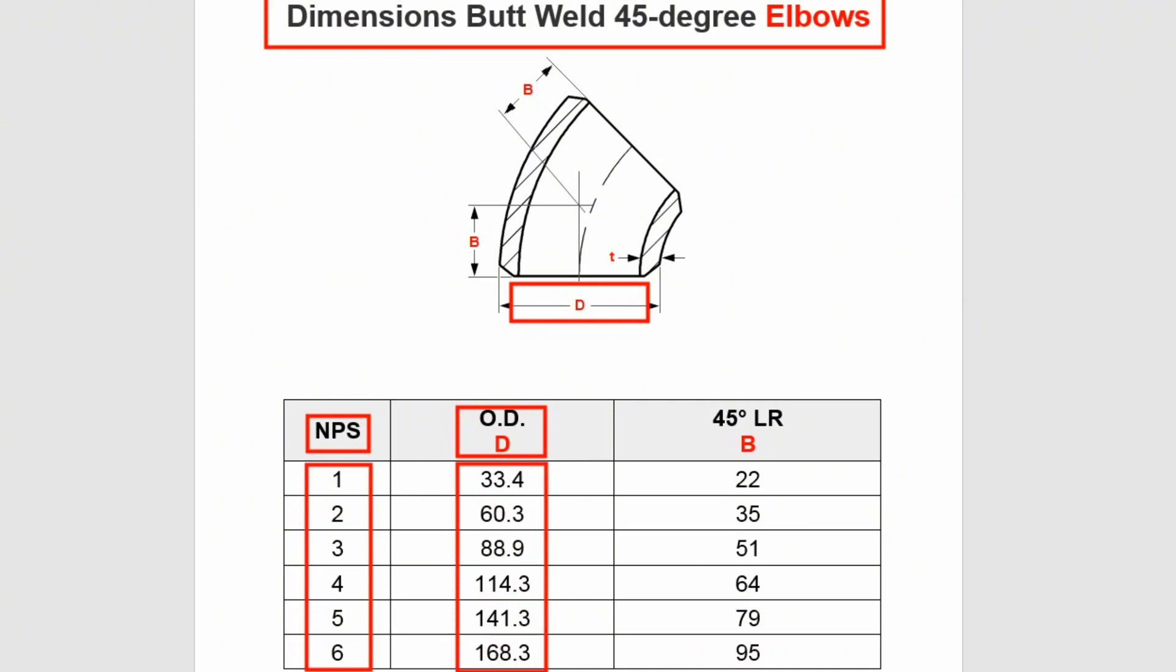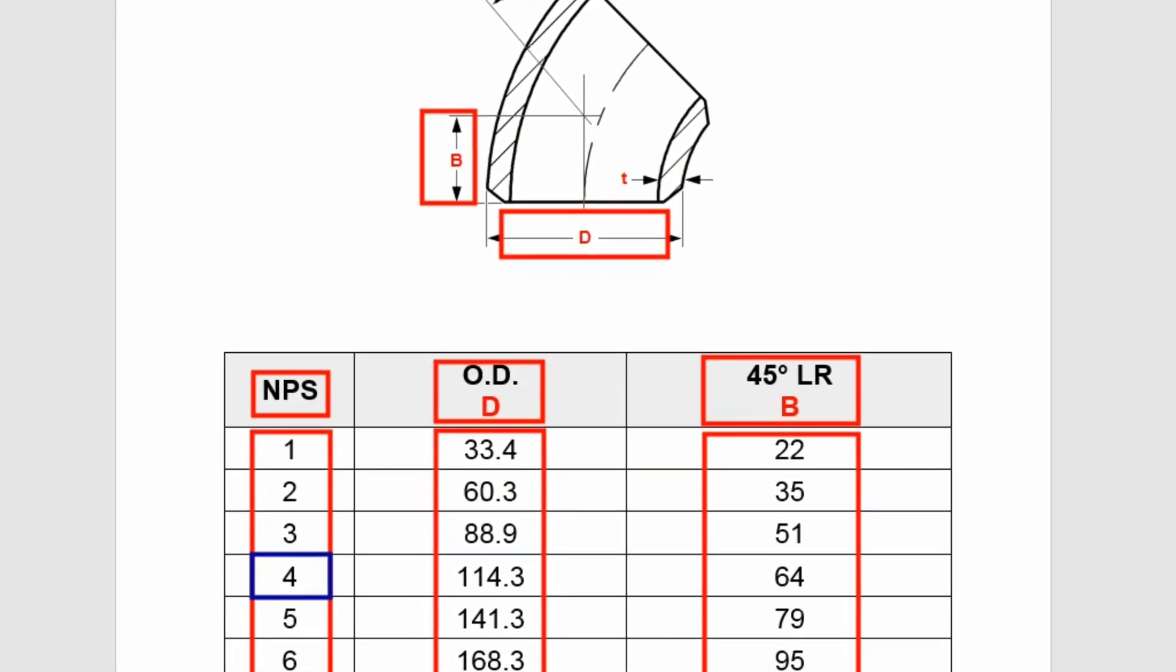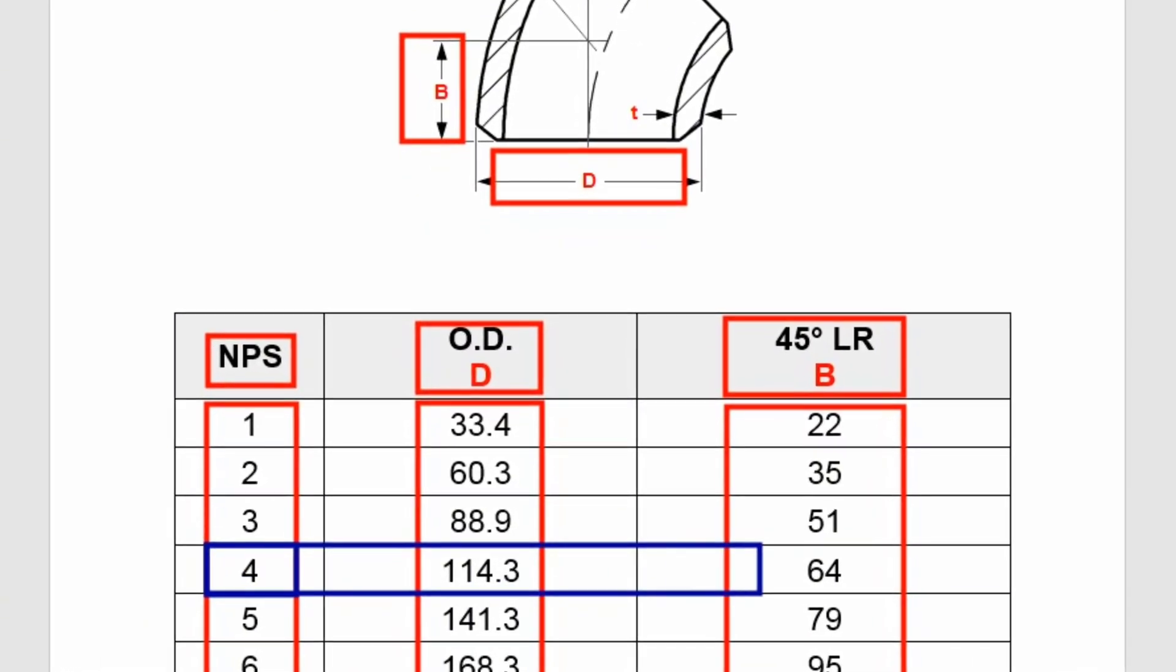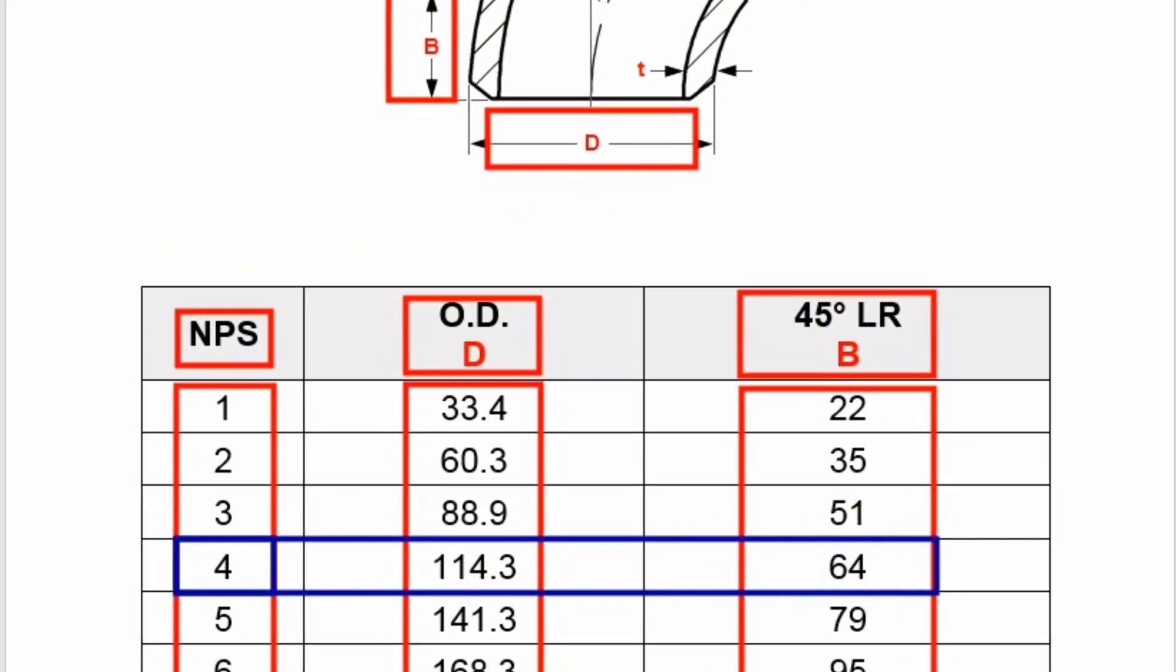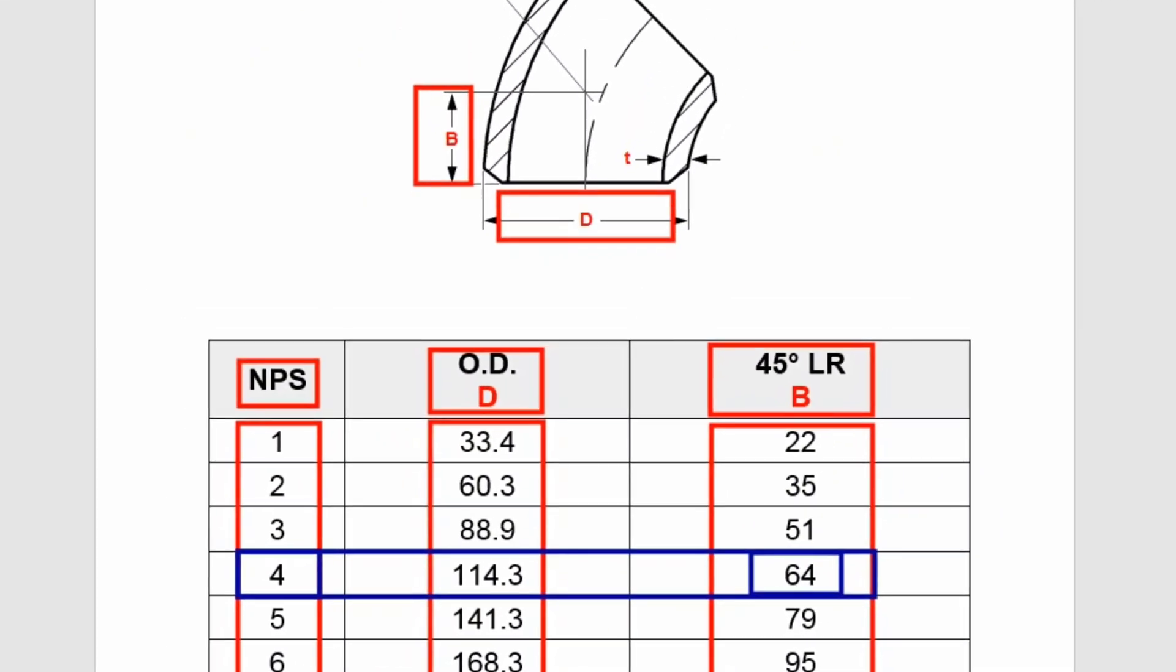B is the center to end of the 45-degree long radius butt weld elbow and shows in this column. We will look to this row: nominal pipe size is 4-inch, outside diameter is 114.3 millimeters, and the center to end of the 45-degree butt weld long radius elbow length is 64 millimeters.